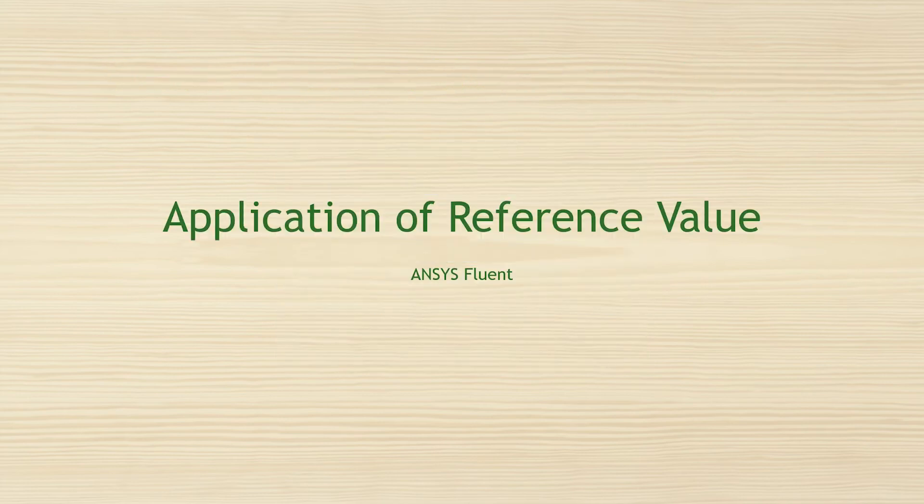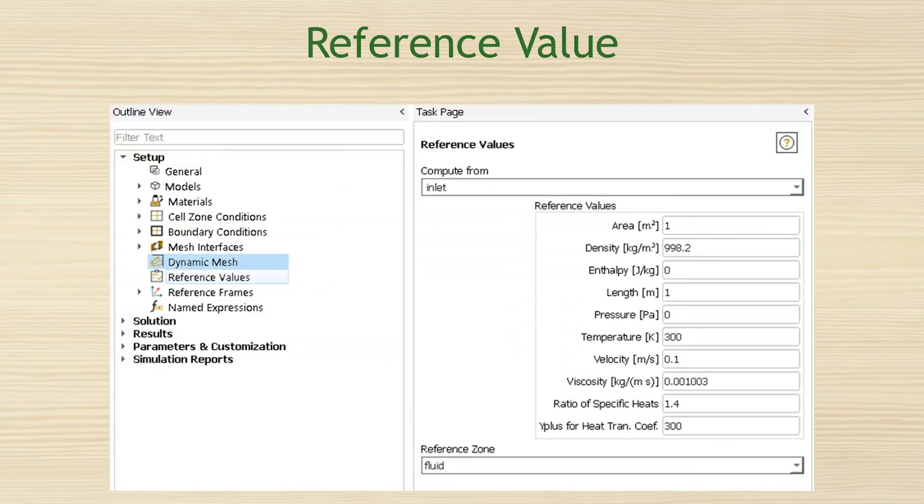Application of reference value in ANSYS Fluent software. Go to the reference value of the task page. We apply the following path: setup and reference value. It contains inputs for the reference values. The reference values to be set are area, density, enthalpy, length, pressure, temperature, velocity, dynamic viscosity, and ratio of specific heats.